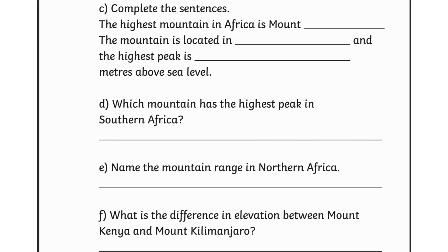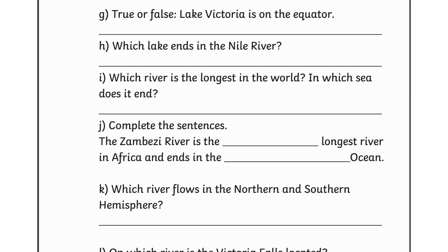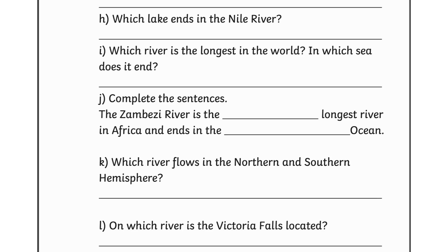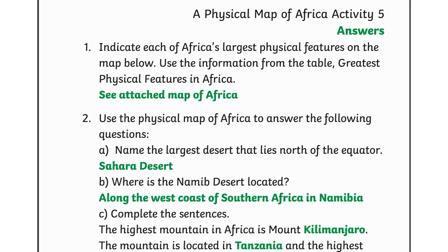Which mountain has the highest peak in southern Africa? Name the mountain range in northern Africa. What is the difference in elevation between Mount Kenya and Mount Kilimanjaro? True or false: Lake Victoria is on the equator. Which lake feeds into the Nile River? Which river is the longest in the world, and in which sea does it end? On which river are the Victoria Falls located?